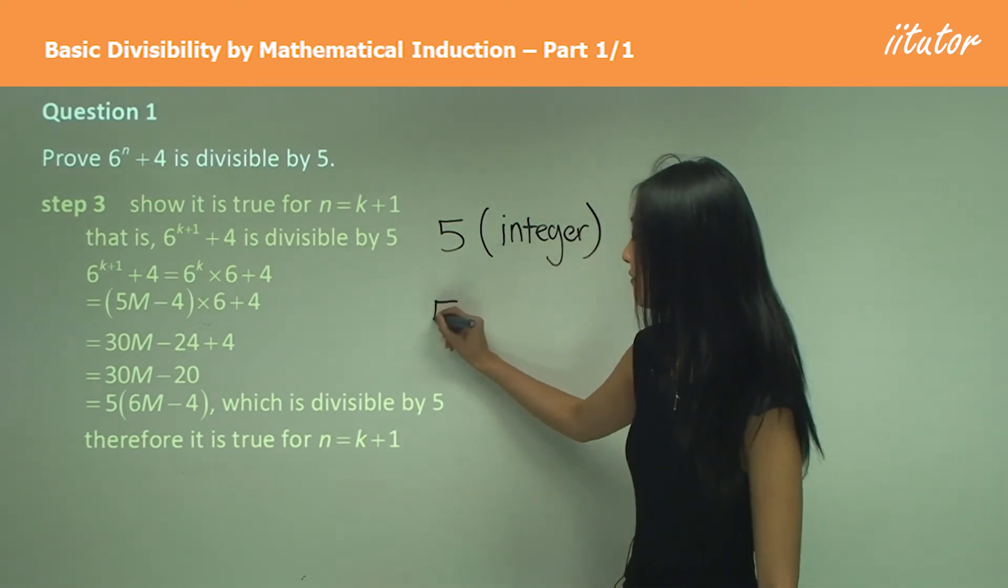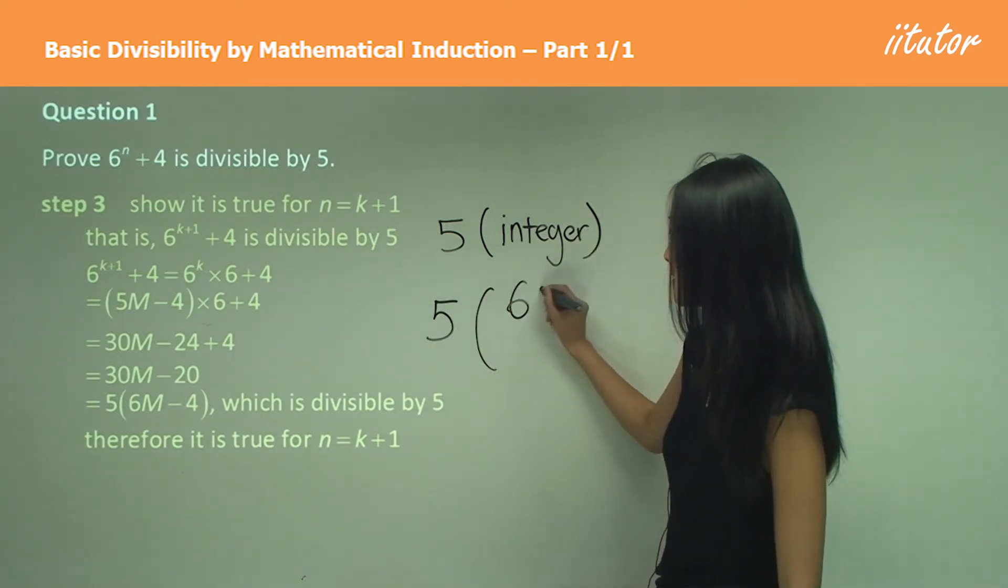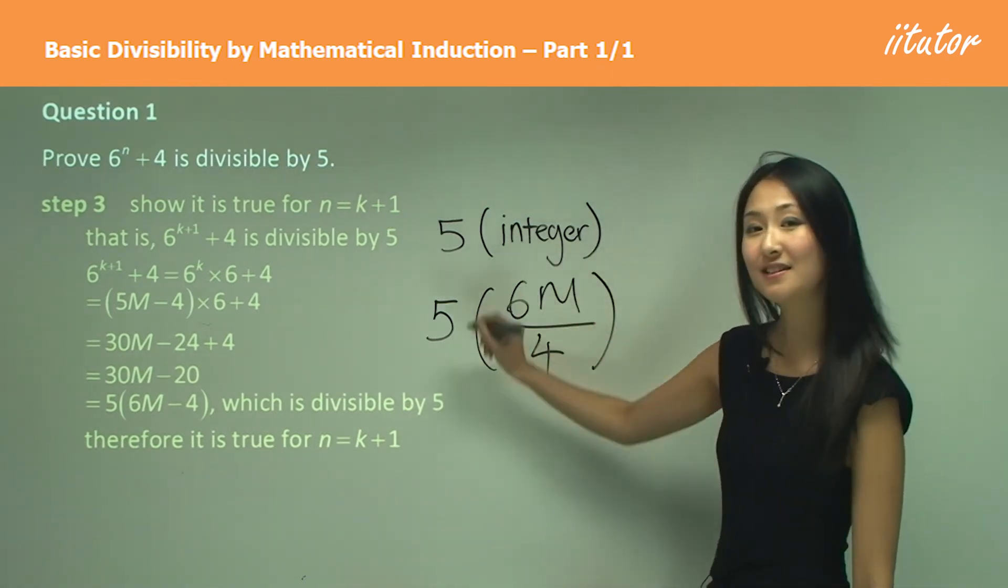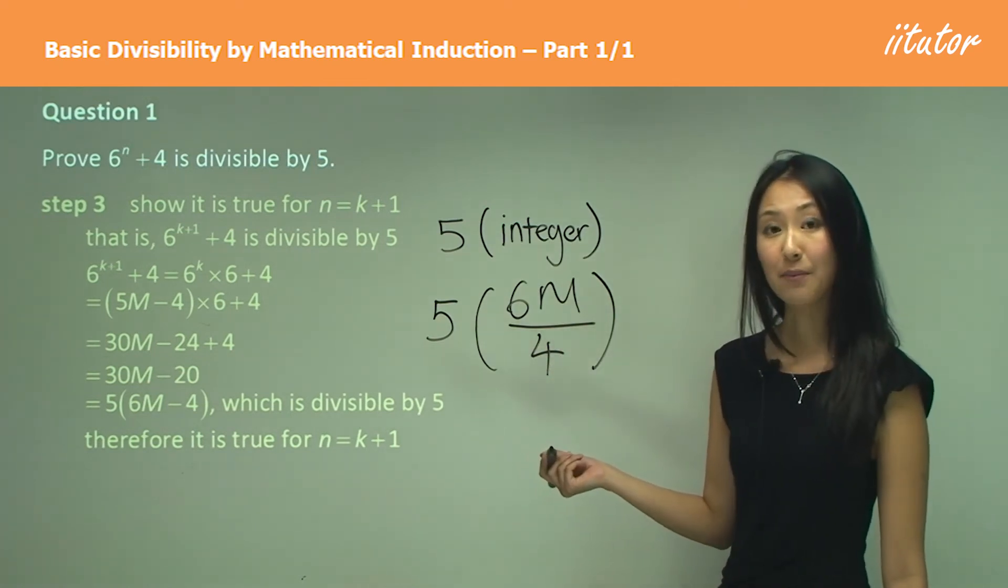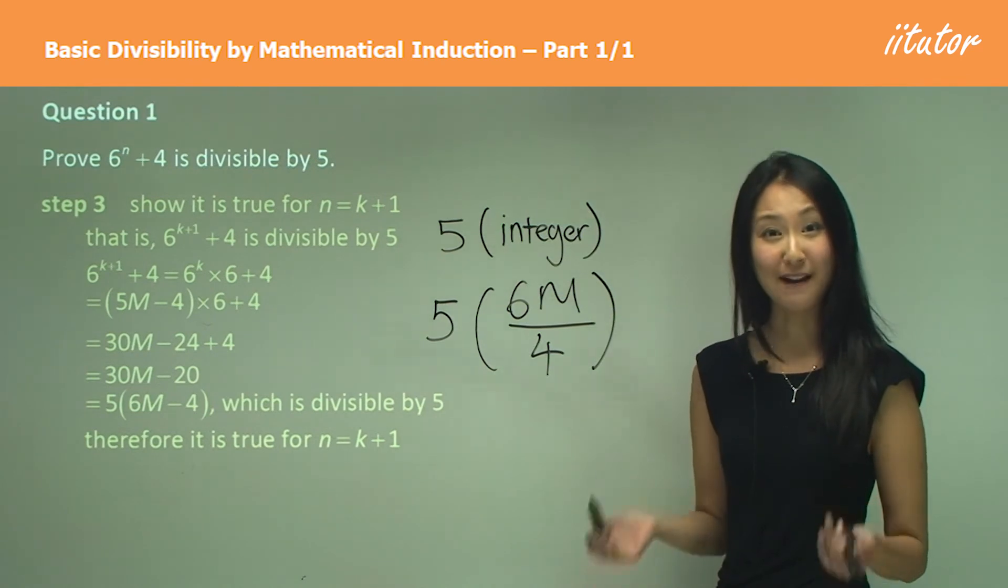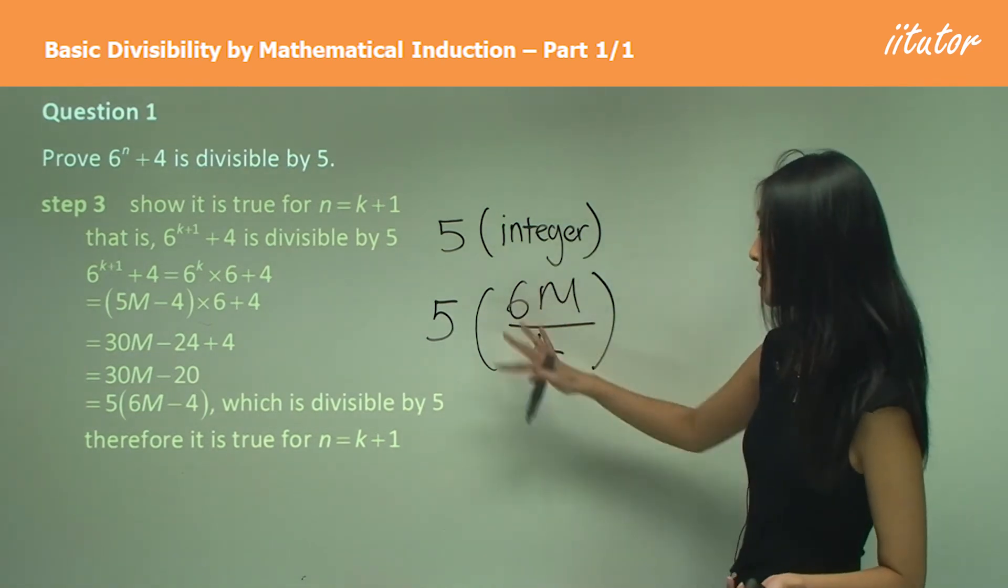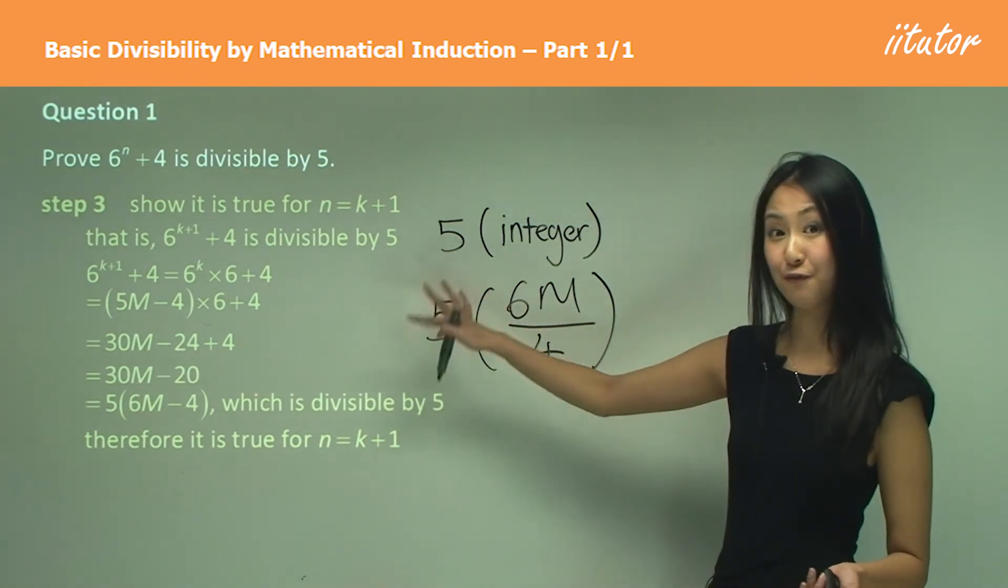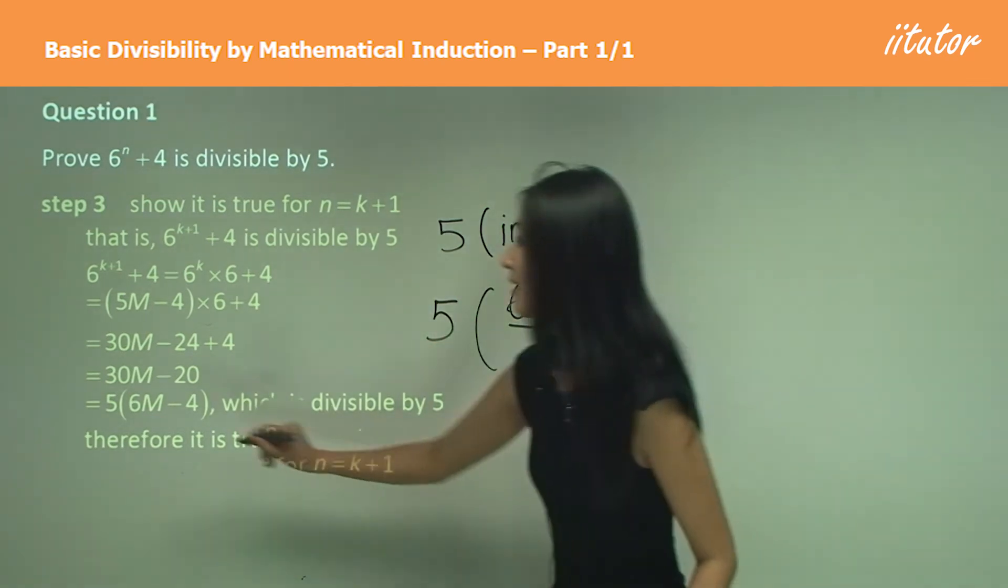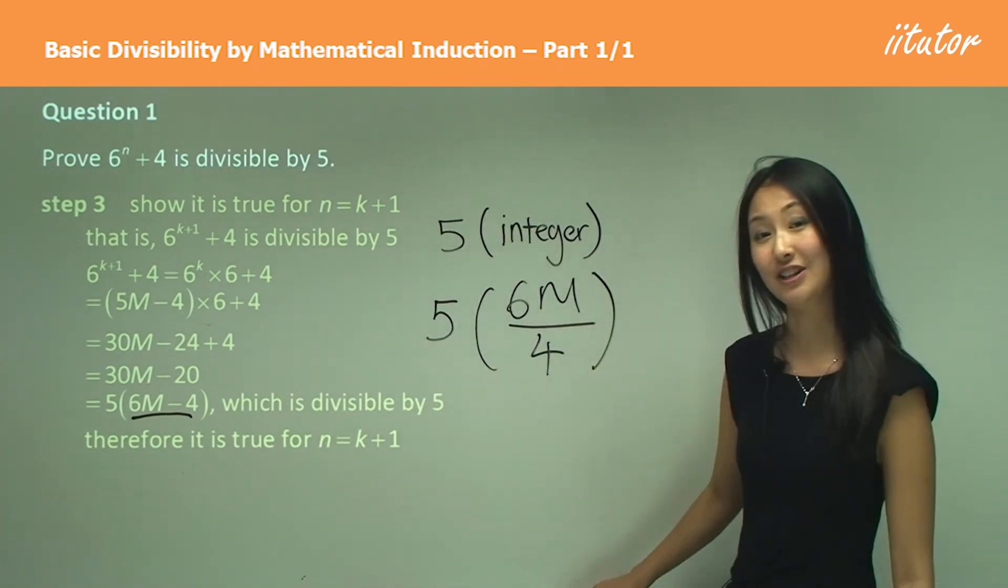Because imagine if I had 5 times 6m divided by 4. Now if this is a fraction like 0.2, for example, and multiply that by 5, that number is not going to be divisible by 5, is it? Because essentially what you would have is 5 over 4 out here.